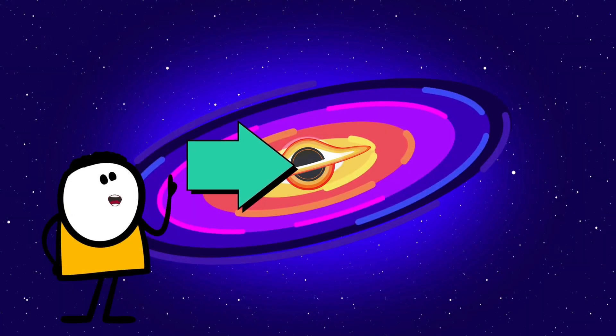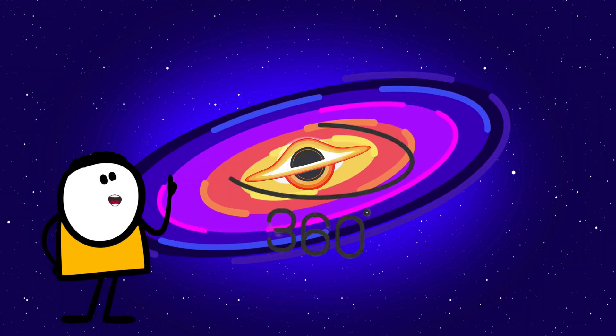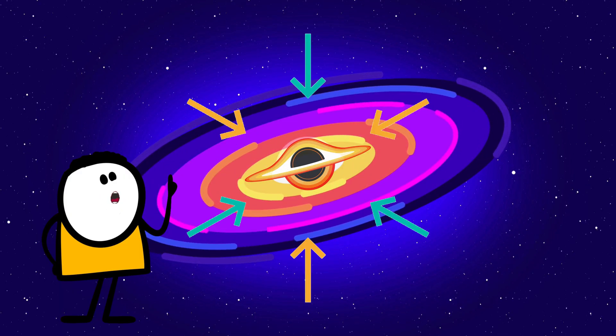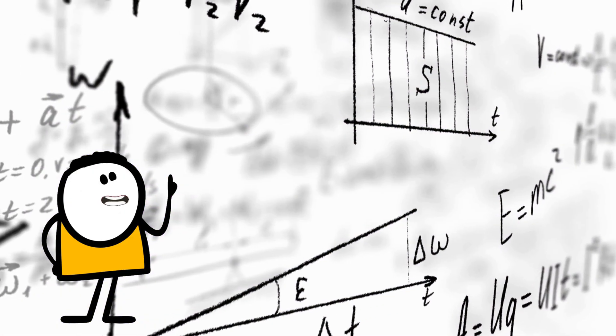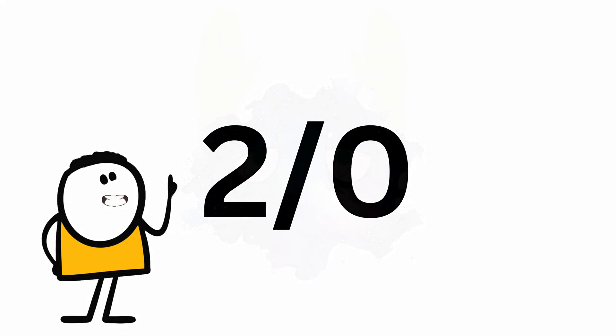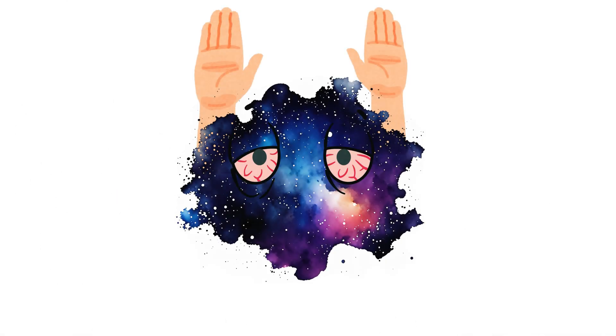Inside the event horizon, you can't turn around. You can't go sideways. Every direction leads you inward. And the scariest part? Physics can't describe what happens there. It's like dividing by zero. The universe throws up its hands and says, you're on your own.